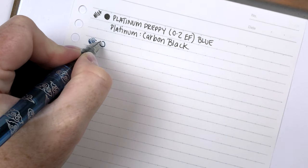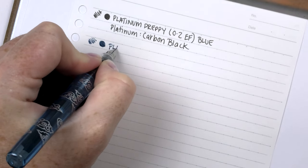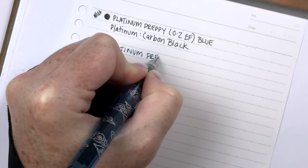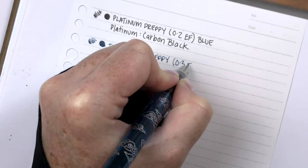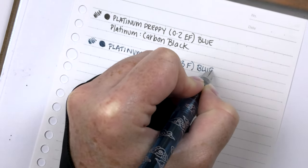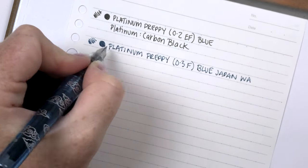This first one is the Preppy Extra Fine. As you can see, that's pretty fine. They write nice and wet, so there's a lot of ink going down, but it's definitely finer than this next one, which is the 0.3 fine. I'm just going to go through here. I might speed it up a little bit so you guys don't get bored, but I'm going to write the name of the pen and then the name of the ink.